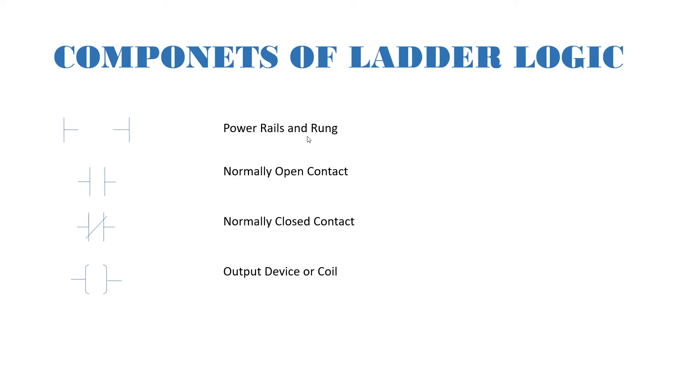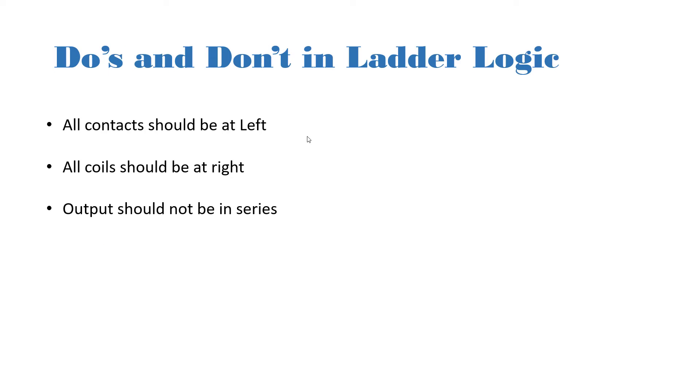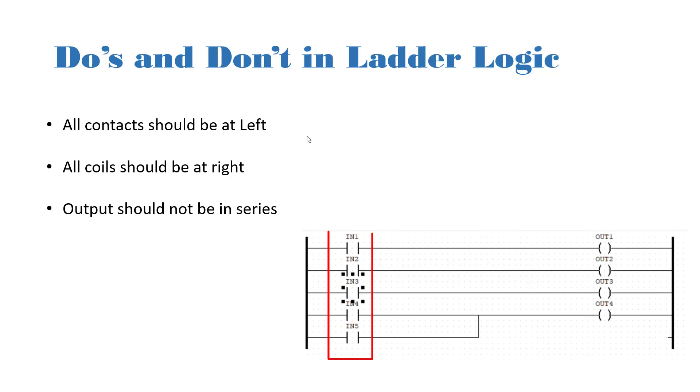Okay so now let's look at some do's and don'ts in ladder logics. Point number one, all contacts should be at left. So you need to connect all contacts at left. All coils should be at right. So coils are always located at the right point of your rung and contacts are always located at the left point of your rung.